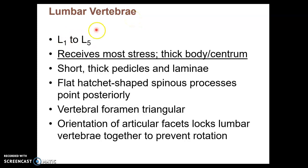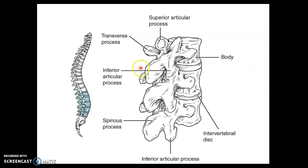Lumbar vertebrae, from L1 to L5, don't have any special parts that other vertebrae don't have, unlike the other regions we went through. However, they are the largest of the vertebral regions — their bodies are the thickest. Looking at an image, you can see that the further inferior we go, the larger the vertebral bodies. The spinous processes tend to be blunt and run straight back, almost like the head of an axe or hatchet.